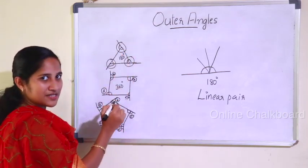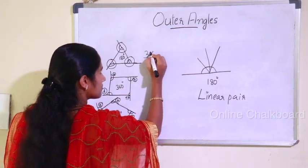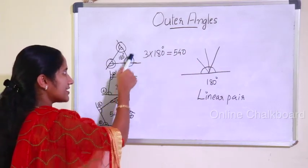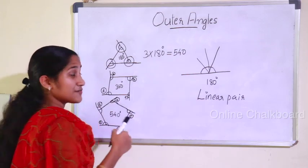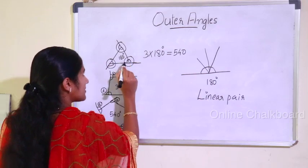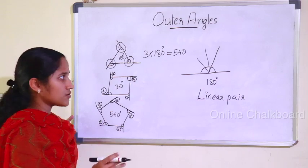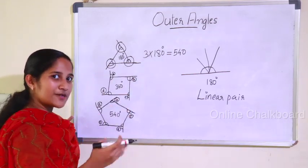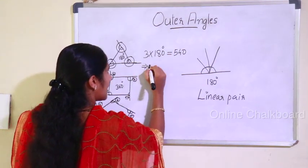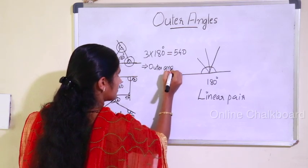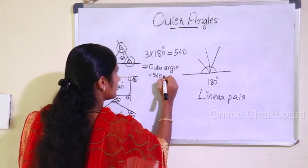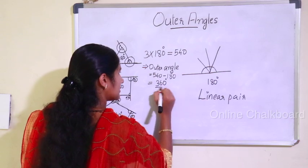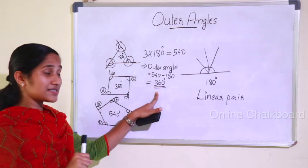The total angle sum from all three linear pairs is 3 × 180 = 540 degrees. The sum of the interior angles of a triangle is 180 degrees. So the sum of the exterior angles equals 540 minus 180, which gives us 360 degrees. The sum of the outer angles of a triangle is 360 degrees.